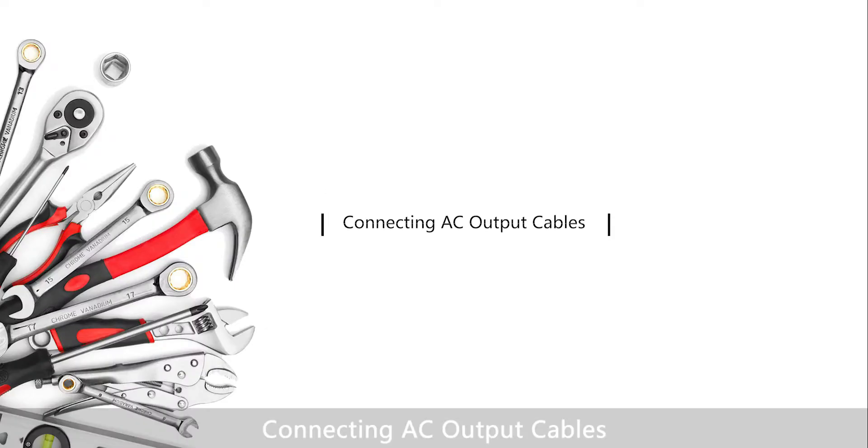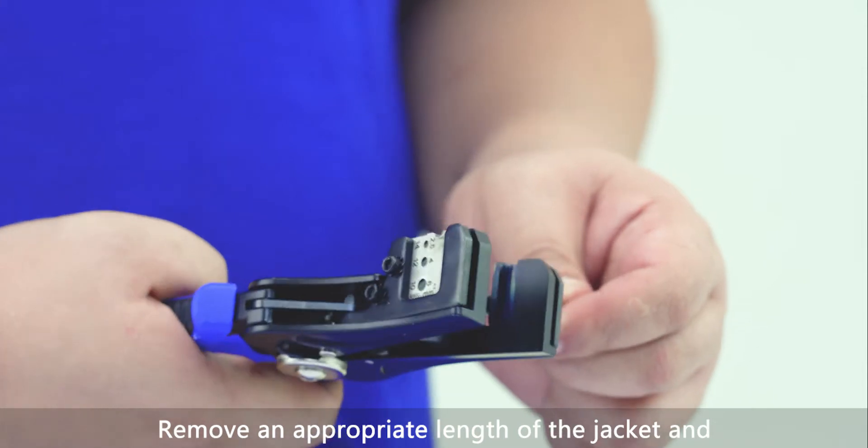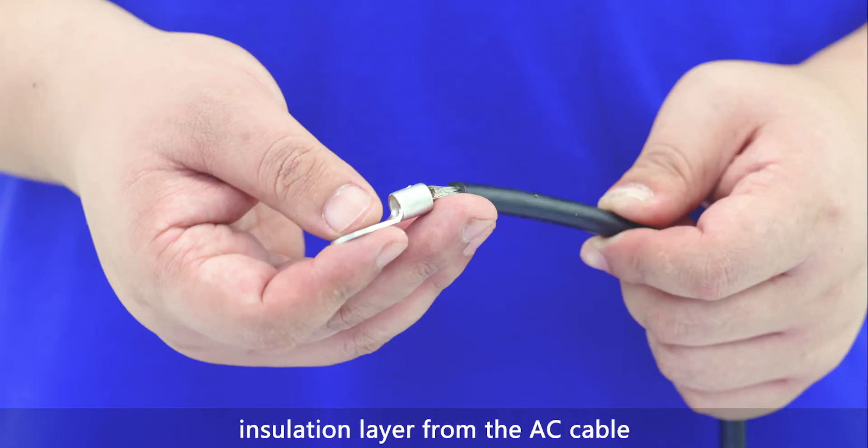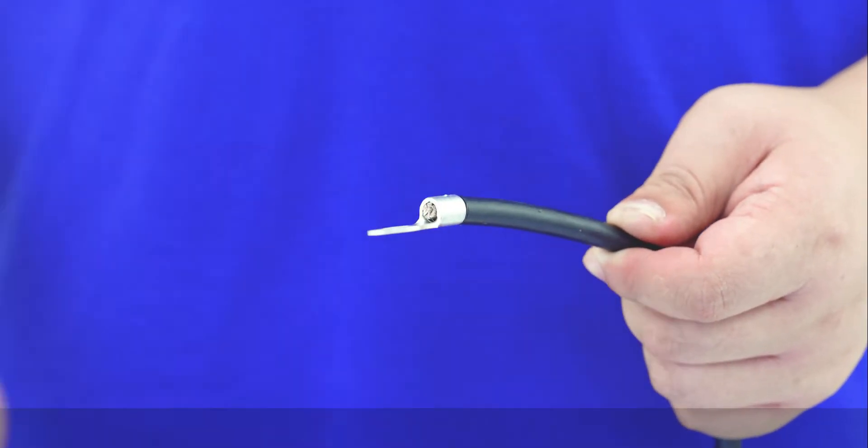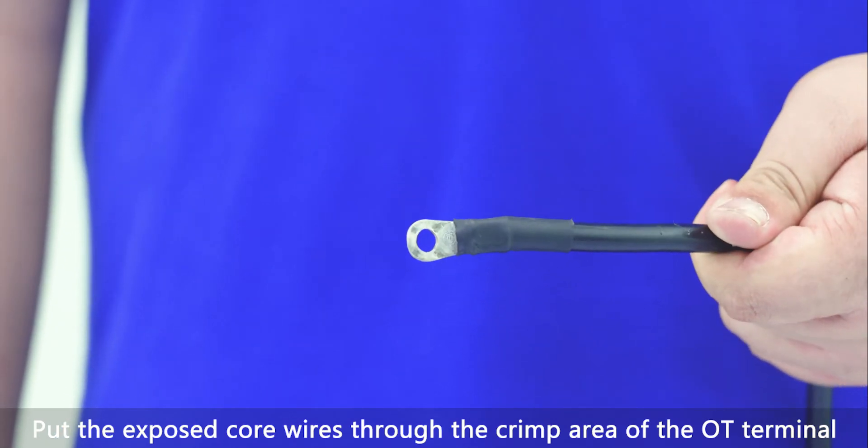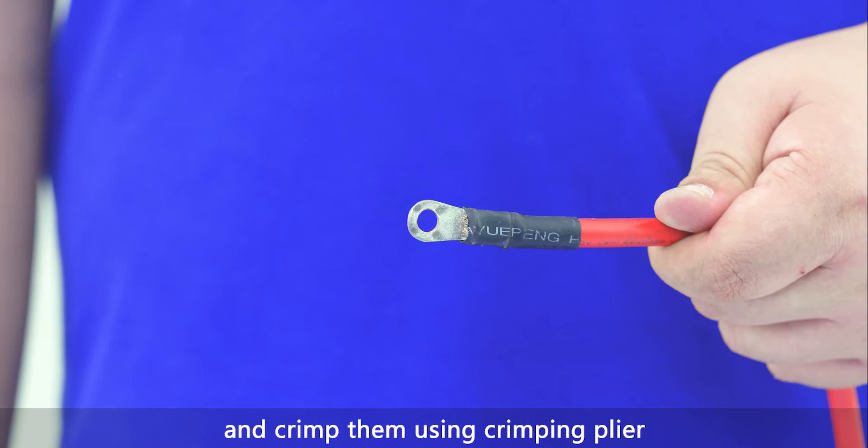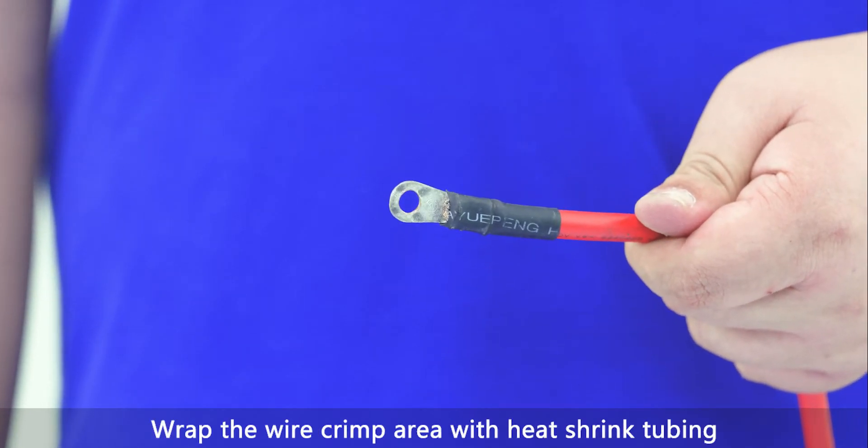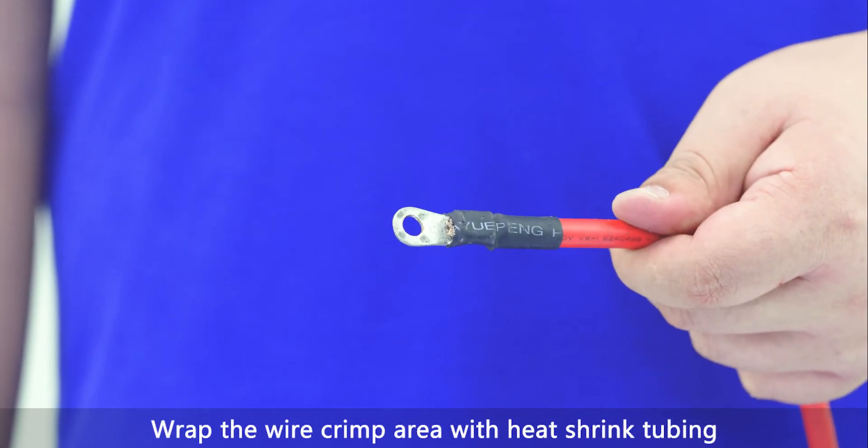Connecting AC output cables. Remove an appropriate length of the jacket and insulation layer from the AC cable. Put the exposed core wires through the crimp area of the OT terminal and crimp them using crimping plier. Wrap the wire crimp area with heat shrink tubing.